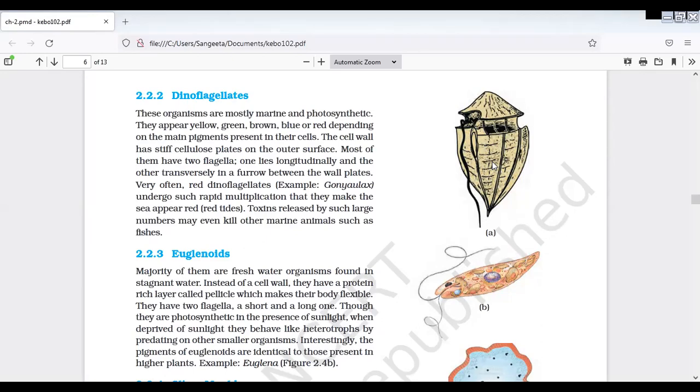And there is yellow, green, brown, blue, red. We have these colors. We have a golden color in our diatoms. The main pigment is the chief pigment. Cell walls are very stiff with cellulosic plates on the outer surface. Mostly two flagella.